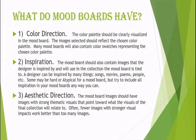The third thing a mood board does is set an aesthetic direction. The mood board should have images with strong thematic visuals that point toward what the final collection will relate to. So if your collection is going to be very flowy, ethereal, with soft colors, you're going to see pictures of clouds, flowing fabrics in the wind, fluttery loose organic shapes. As opposed to if your collection is going to have strong geometric repetitive patterns, you might see a mood board full of buildings or architectural drawings.